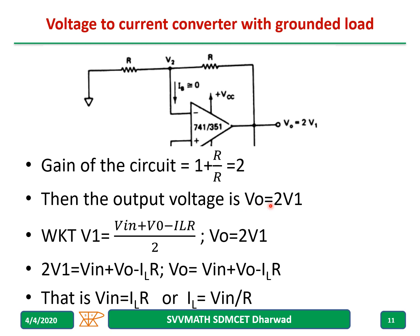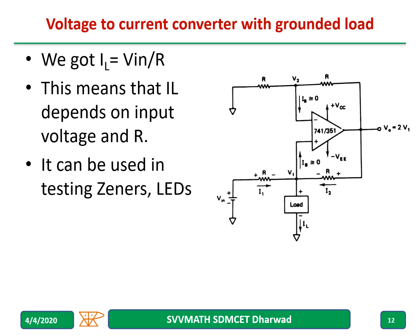When the output voltage V0 equals 2 times V1 — we have already studied the V1 equation, and the V0 equation was just derived. Substituting 2V1 equal to V0 into the equation gives Vin equal to IL times R. Therefore, IL is nothing but Vin divided by R. This means the load current IL depends only on the input voltage and the resistor R.